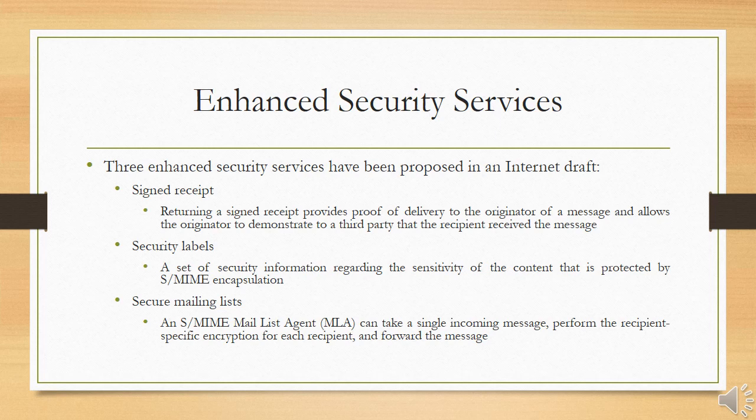When a user sends a message to multiple recipients, a certain amount of per-recipient processing is required, including the use of each recipient's public key. The user can be relieved of this work by employing the service of an S/MIME Mailing List Agent (MLA). An MLA can take a single incoming message, perform the recipient-specific encryption for each recipient, and then forward the message. The originator need only send the message to the MLA with encryption performed using the MLA's public key.